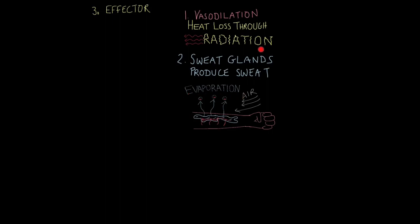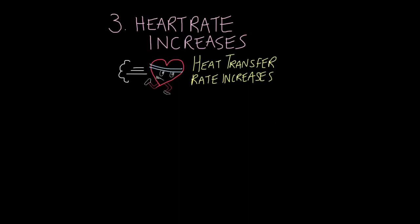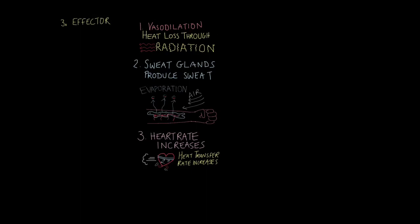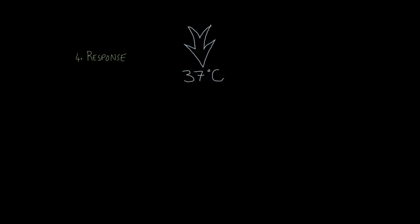So remember, sweat glands produce sweat, which encourages heat loss through evaporation. Always write the process, radiation, evaporation. Also, our heart rate increases. This is so that blood circulates around our body faster, so more heat is transferred through the process of radiation. So heat transfer rate increases. That's exactly why Charles Blagdon's heart rate doubled. So three key effectors were vasodilation, where heat is lost through radiation, sweat glands producing sweat, which achieves heat loss through evaporation, and our heart rate increases, which increases the rate at which heat transfer occurs, either through radiation or evaporation. These effectors help bring about the response, which is a reduction in our body temperature back down to the optimum temperature, which is 37 degrees Celsius. In other words, negative feedback has been achieved.